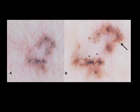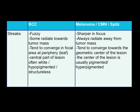Here is a basal cell carcinoma revealing structures that resemble streaks at the periphery, highlighted by the black arrow. In addition, this lesion has streaks present towards the inner part of the tumor. Note that the streak-like structures marked by the asterisk are radiating towards the tumor itself — a feature not seen in true streaks encountered in melanocytic lesions. In basal cell carcinoma, the streaks tend to be fuzzy and out of focus, some radiating towards the tumor mass, and they tend to converge towards a focal area at the periphery creating the so-called leaf-like structure. The geometric central portion of the lesion is often white or hypopigmented and structureless.